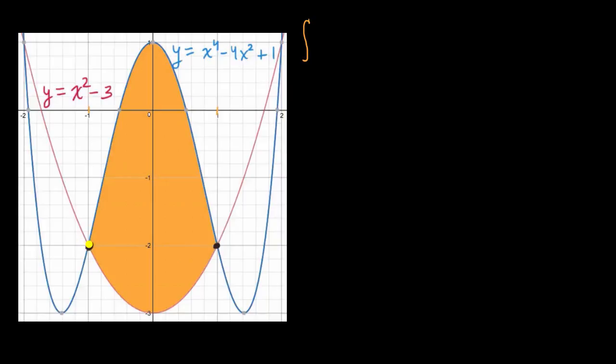What is this point of intersection? It looks like it is negative one comma negative two. We can verify that. In this red curve, if x is negative one, you square that, you'll get one minus three. You do indeed get y is equal to negative two. And in the blue function, when x is equal to negative one, you get one minus four plus one. Once again,